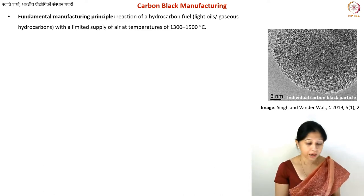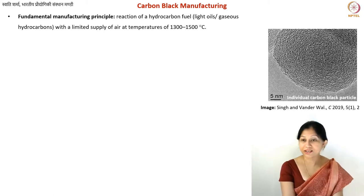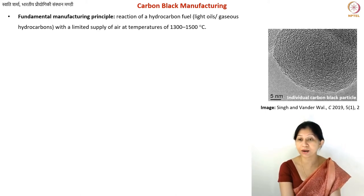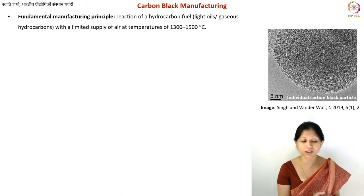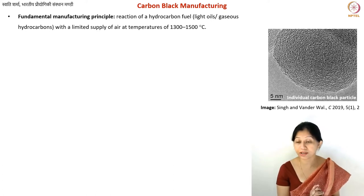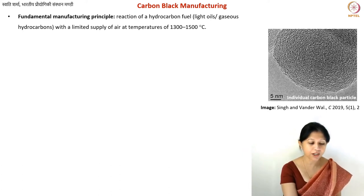When we talk about manufacturing, this is probably the only carbon material in this course formed by combustion and not just pure pyrolysis. The process is a combination of combustion and pyrolysis, and these two processes in carbon black manufacturing are really difficult to separate. The idea is that you take a hydrocarbon as a precursor, because for every carbon material, hydrocarbons are essentially your precursors.